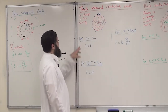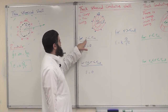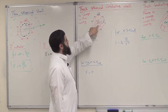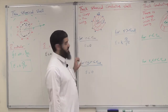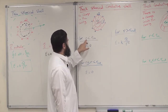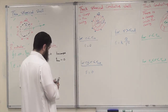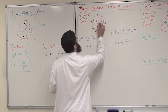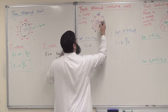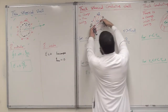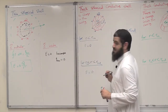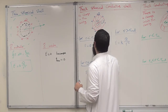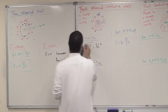For finding the electric field at any r smaller than the inner radius — meaning points located inside the cavity — of course the electric field will be equal to zero. If you draw a Gaussian surface and look inside, how much is q_enclosed? You will find there is no q_enclosed; q_enclosed equals zero. As a result, the electric field will be equal to zero.